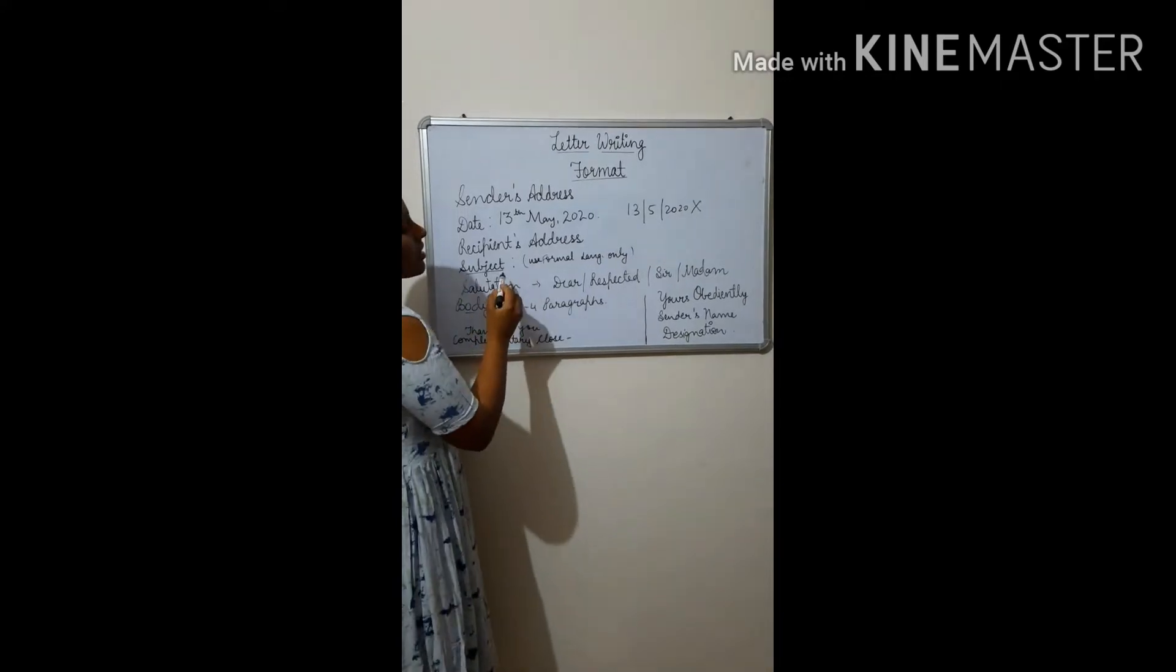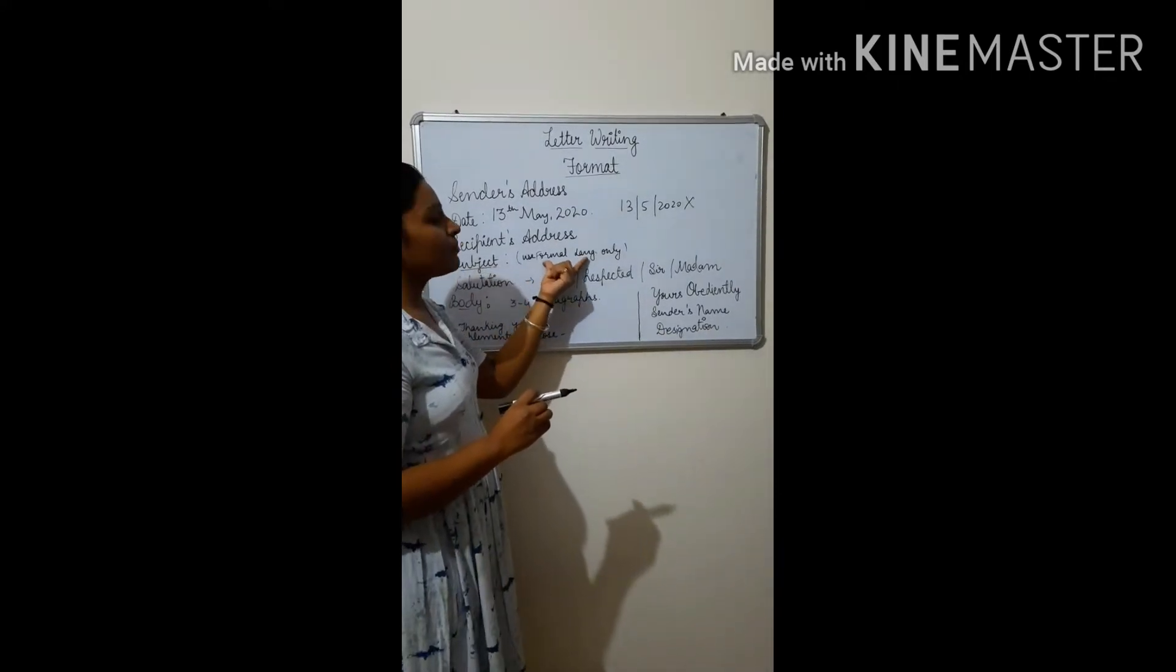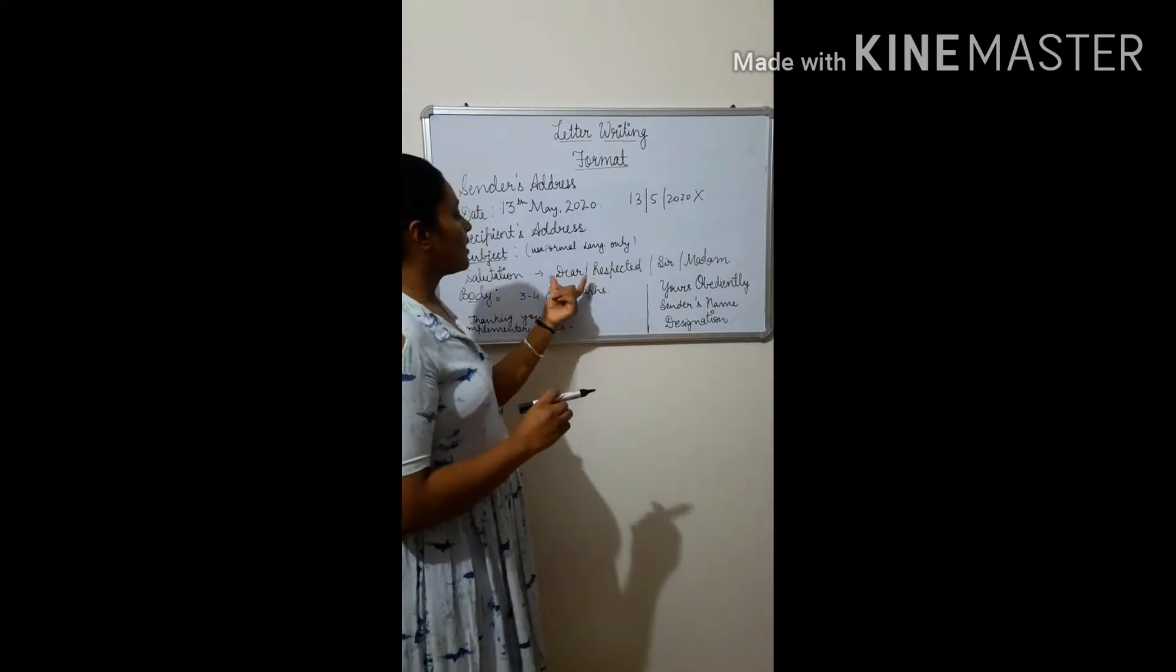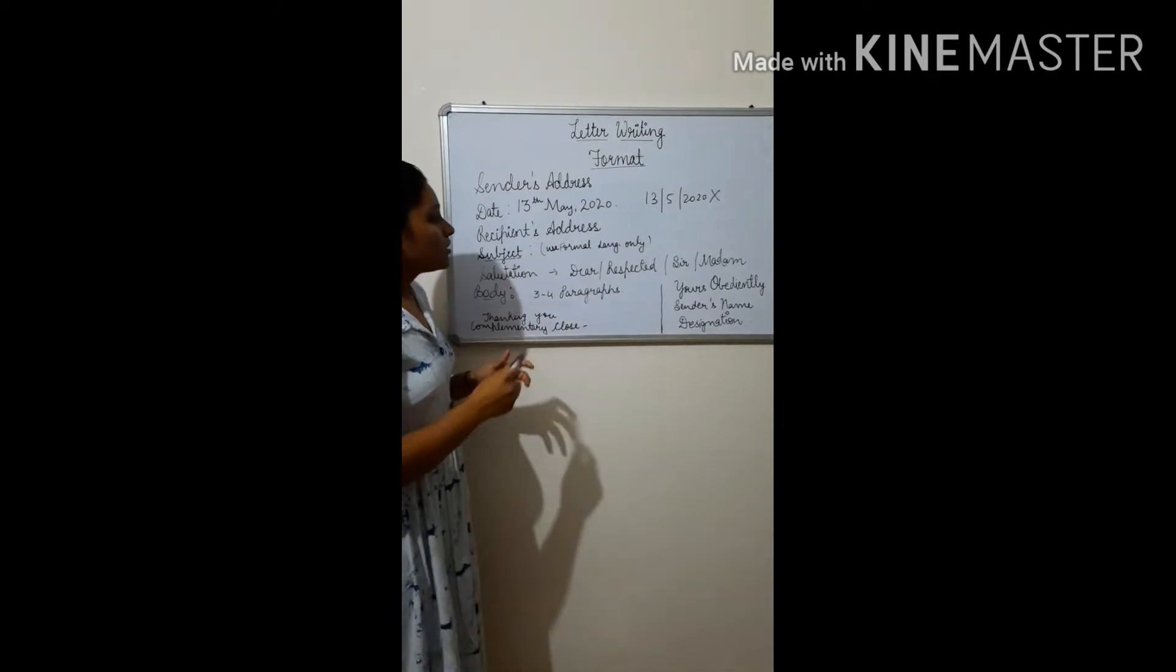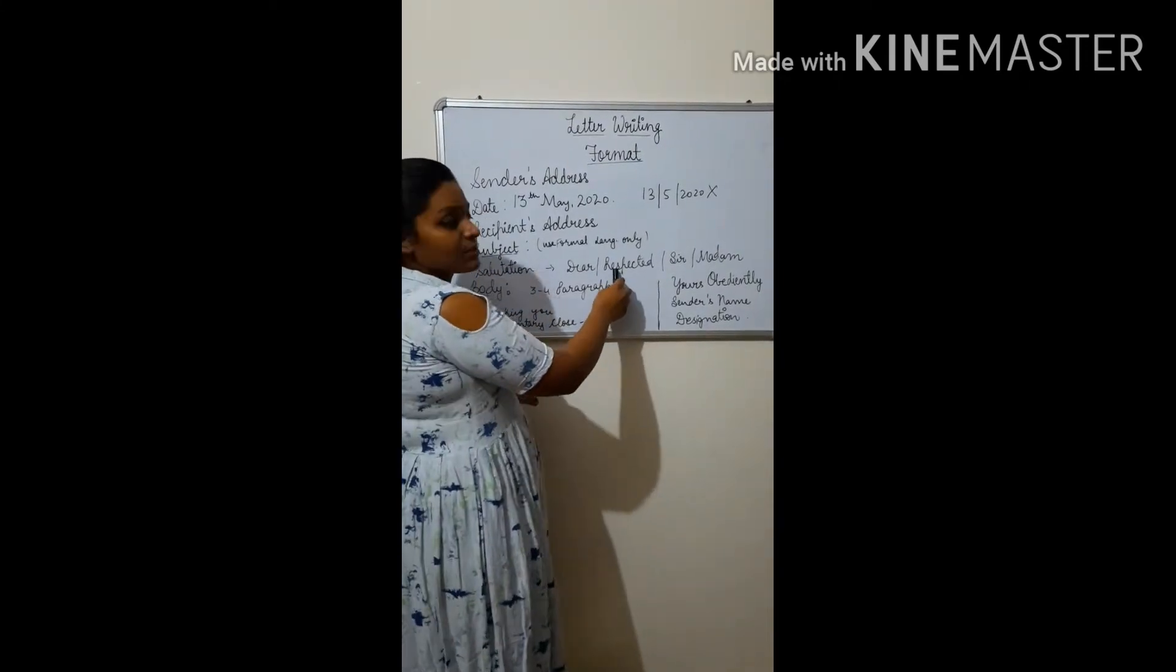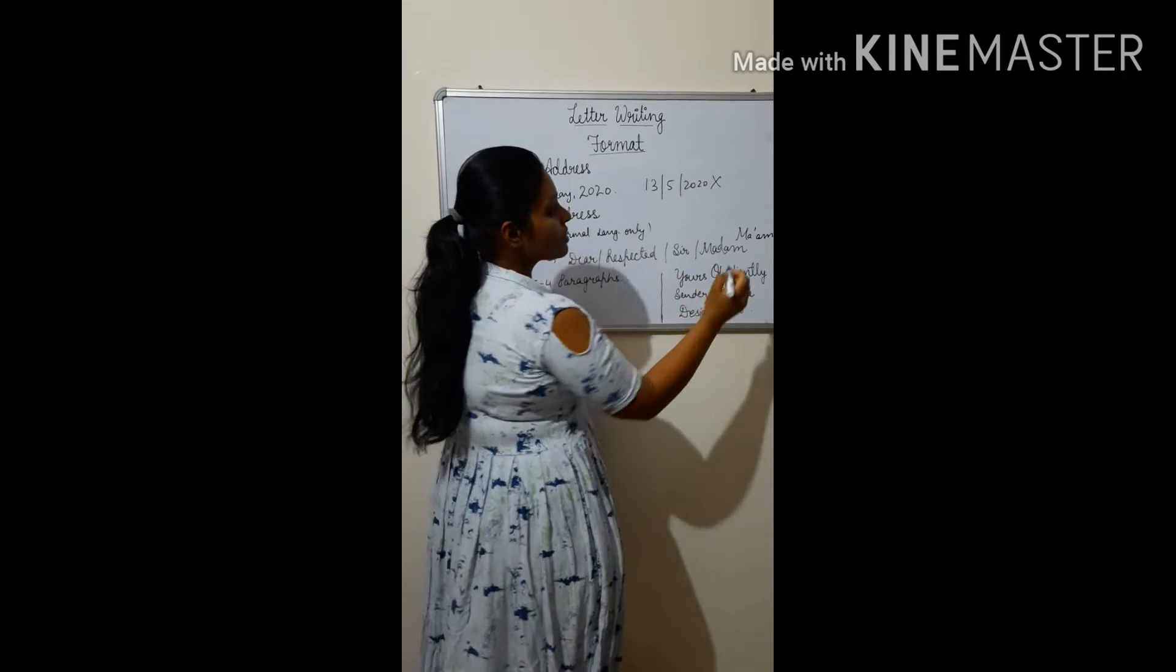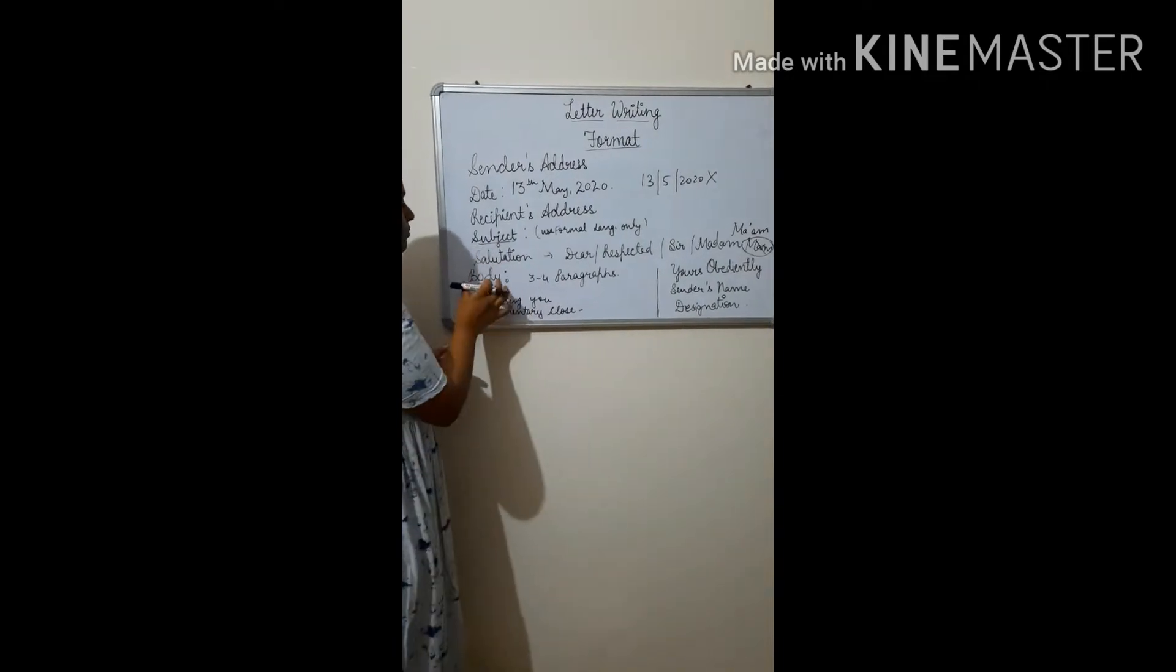After that, subject will come. While writing formal letters, this point is very important. We should write subject. We should use formal language only, and it will provide information regarding what the letter is all about. After that, salutation will come. Salutation involves dear, respected. The words like dear. If we are writing letter to any stranger person, we can use dear. Or if you are writing to principal, so we should also use the words like respected madam or respected sir. Also, we can only use sir, madam or ma'am like this. After that, body of letter will come, and it will start from the leftmost corner itself.